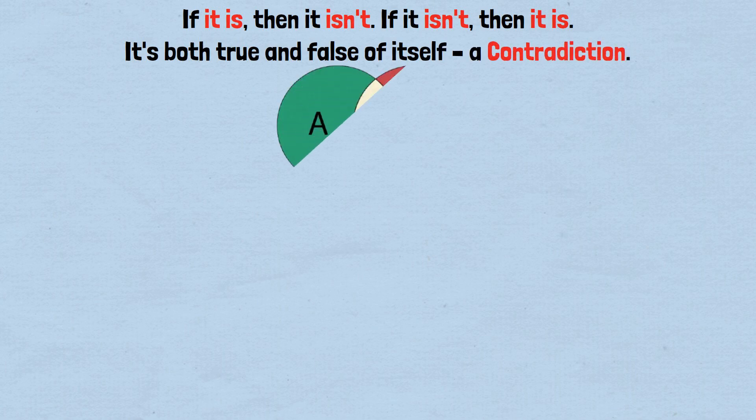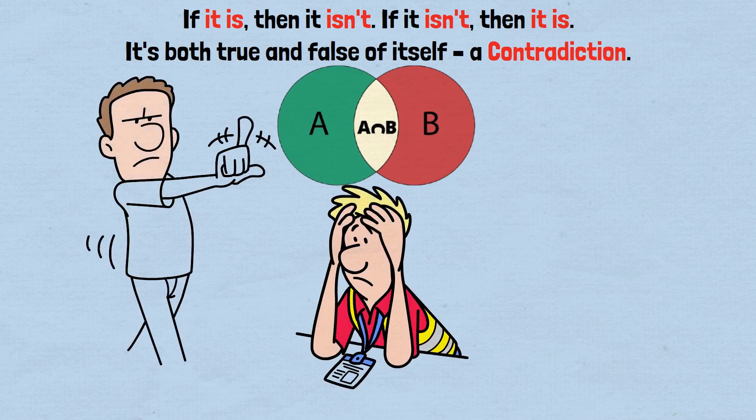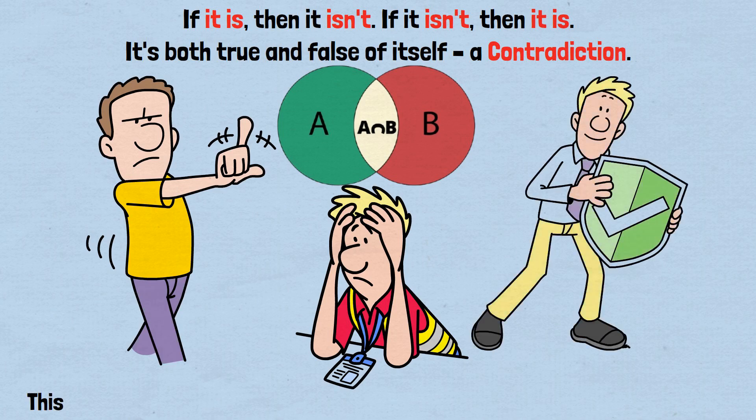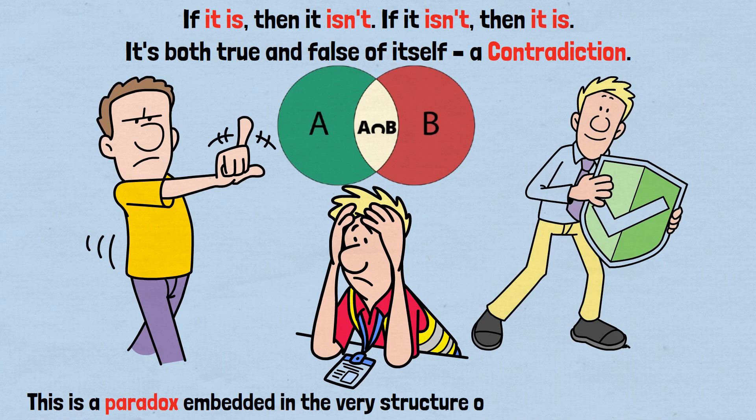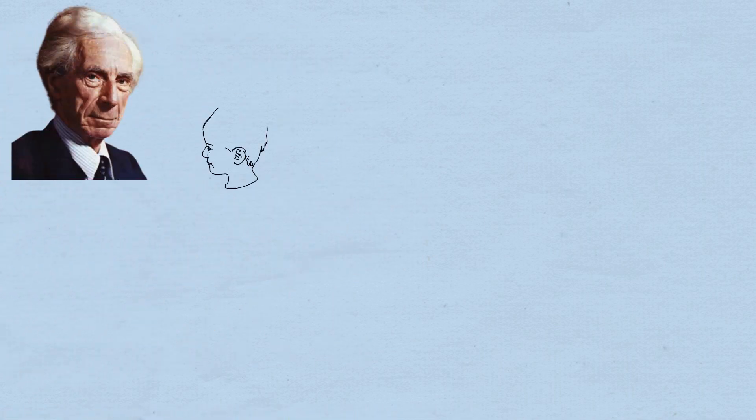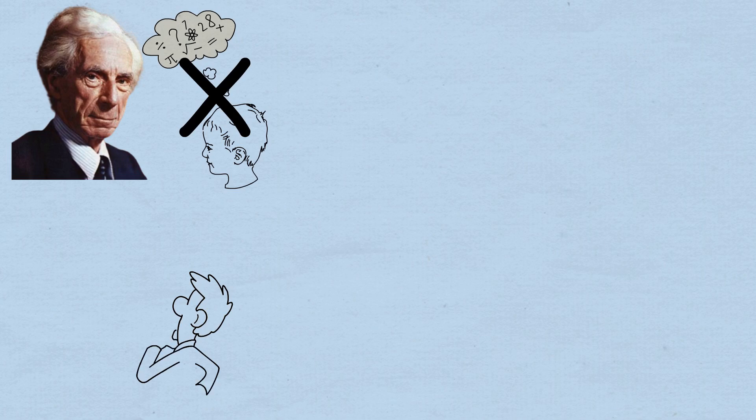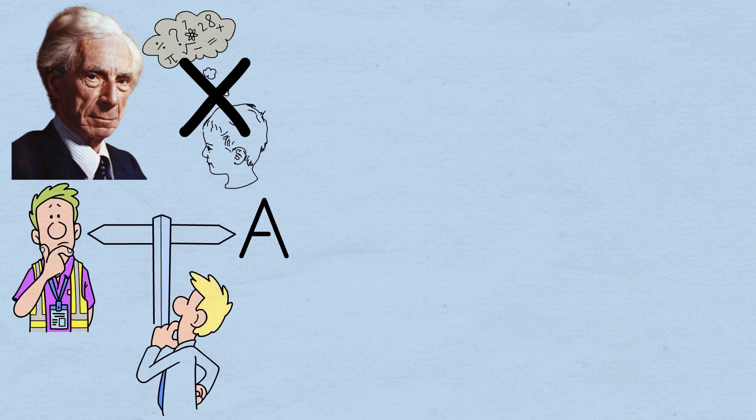And unlike the paradox in set theory, we can't escape this by declaring that predicates cannot be true of themselves. We've already seen clear examples where predicates are true of themselves. This is a paradox embedded in the very structure of our language and thought. What makes Russell's paradox so profound is that it isn't just a quirk of some arbitrary mathematical system. It reveals something essential about how we think and how we use language.